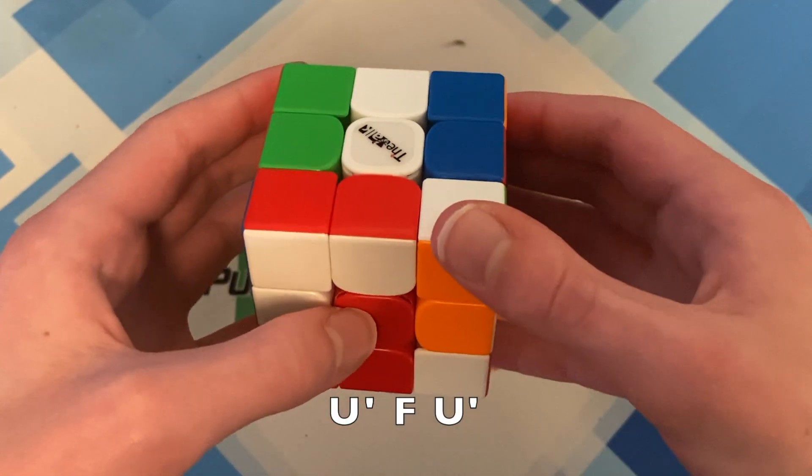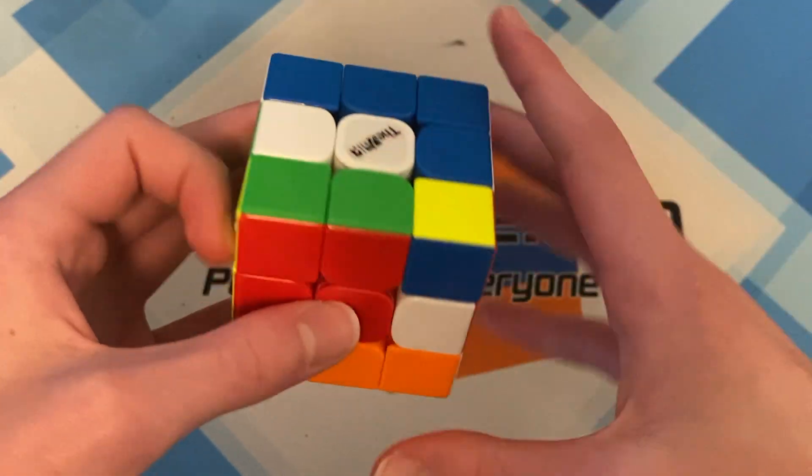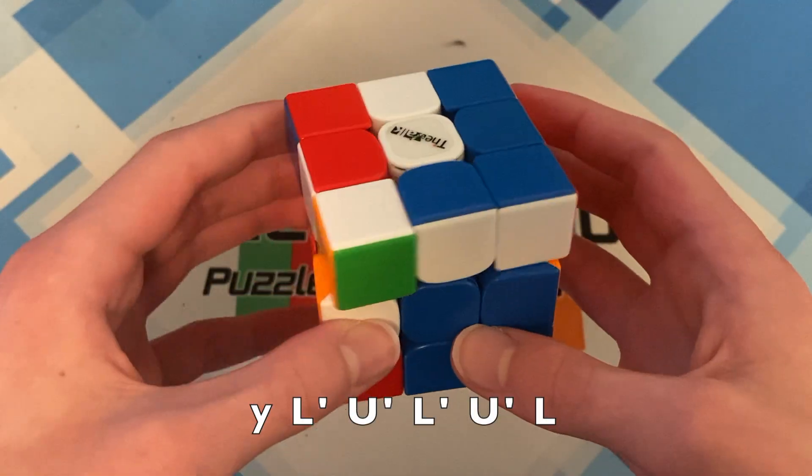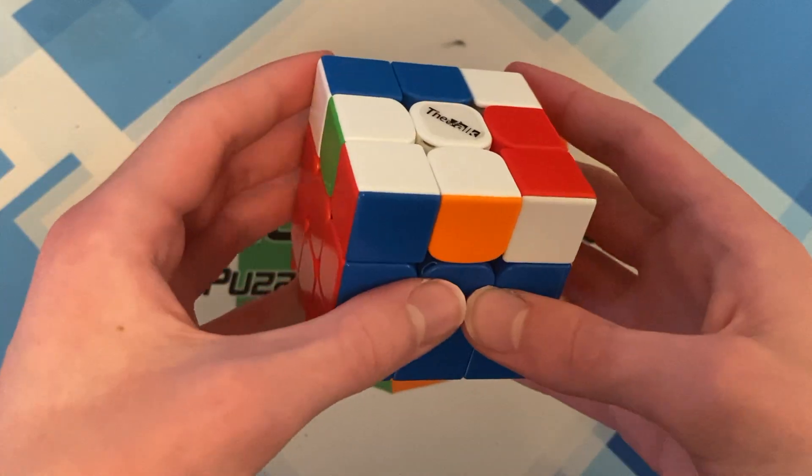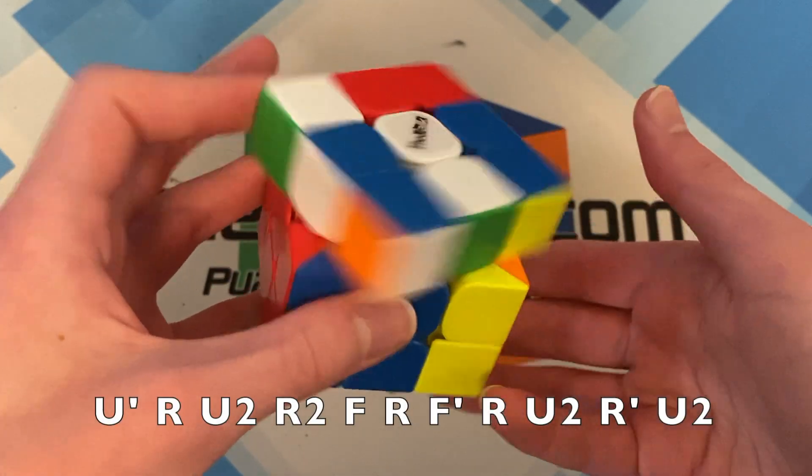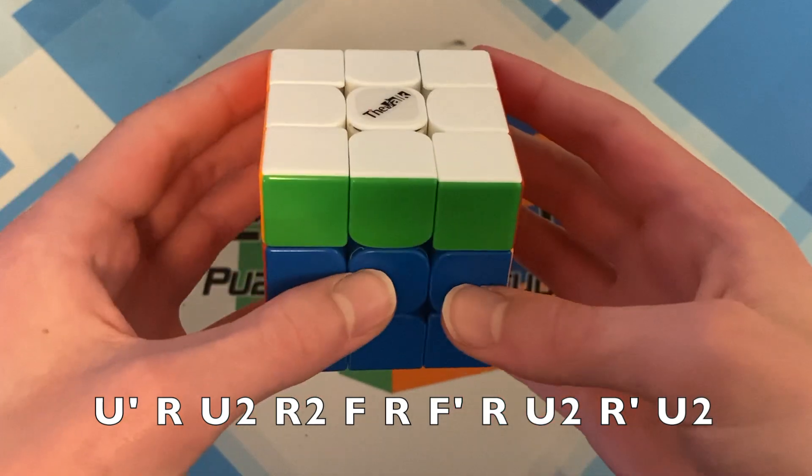So I started inserting this one with F moves, and then realized that this one is oriented, so rotated. And here you might be able to tell this is going to be a PLL skip. Yeah.